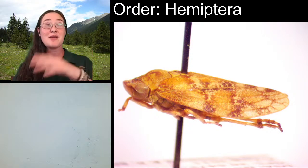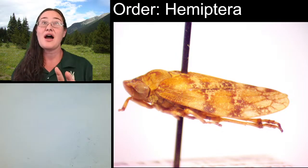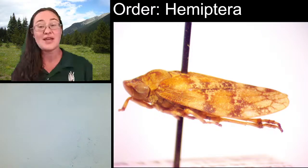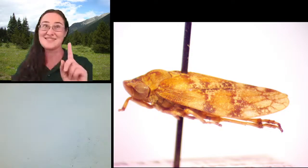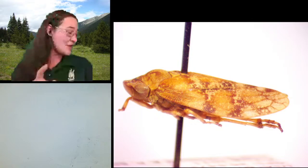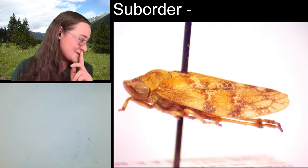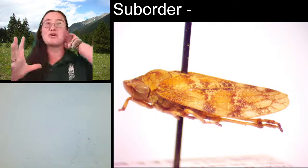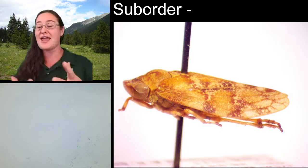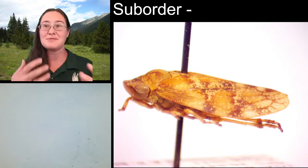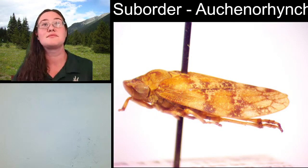Although the insects in this group have either fully membranous or fully leathery front wings — like our frog hoppers, leaf hoppers, and actually cicadas. They're all in this suborder called Auchenorrhyncha. They're still Hemipterans, but they don't share that same characteristic of the hemi-elytra — that half membranous and half leathery wing type.